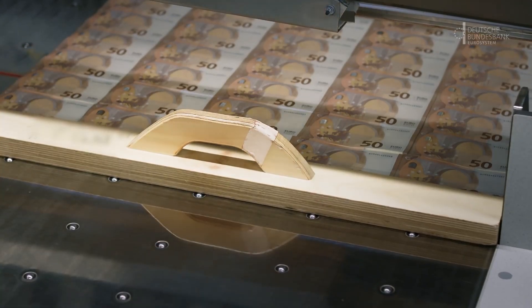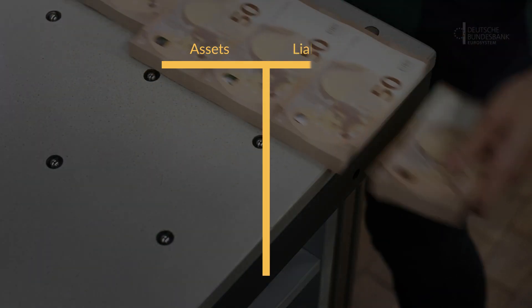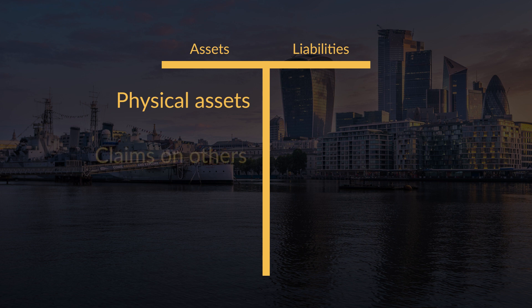In my opinion, money printing can best be understood by viewing it through simple balance sheets. The balance sheet of an entity consists of both assets and liabilities. Assets are typically depicted on the left side of the balance sheet and contain both physical assets such as buildings or machines that the entity owns, as well as claims that the entity has on others. On the liability side of the balance sheet, all claims on the entity are depicted.